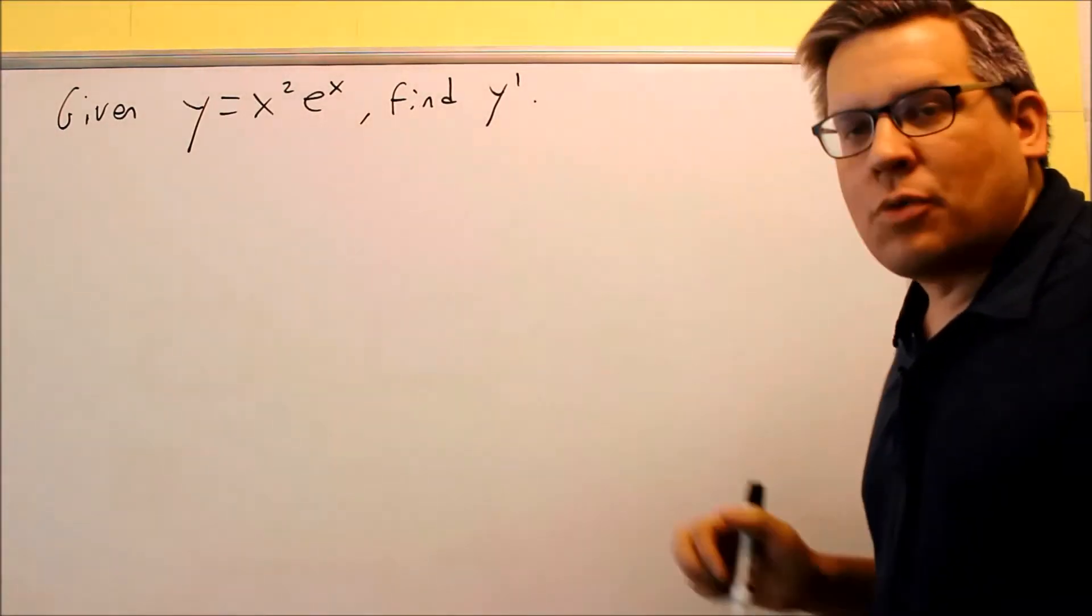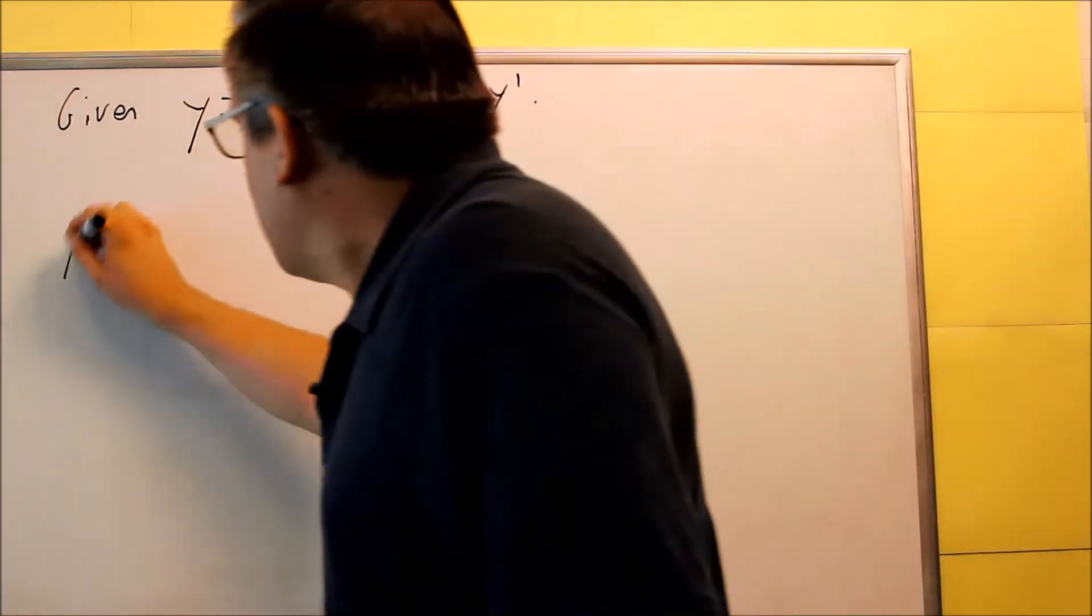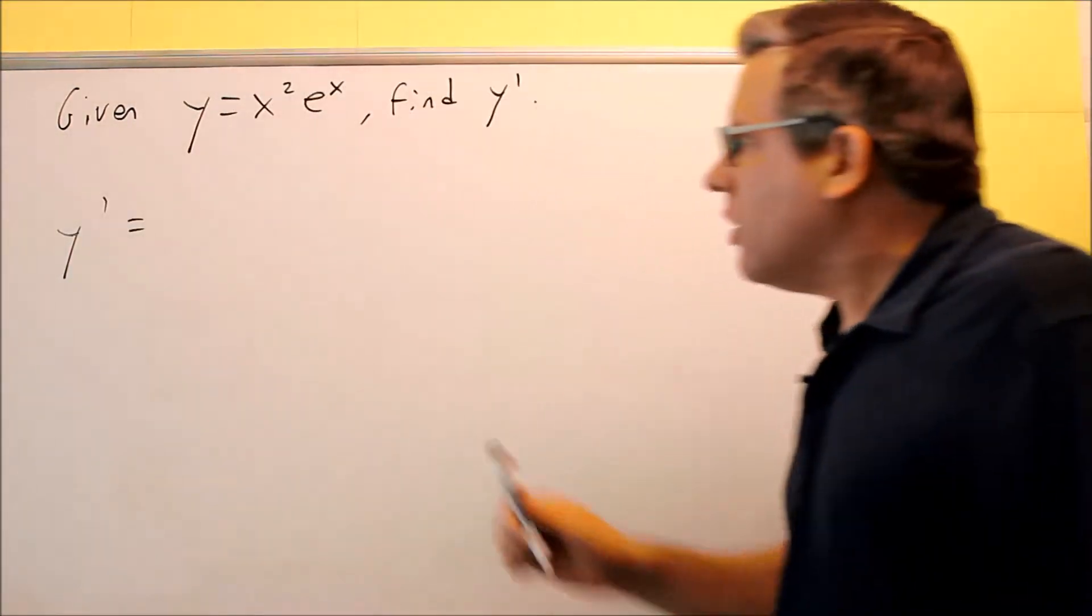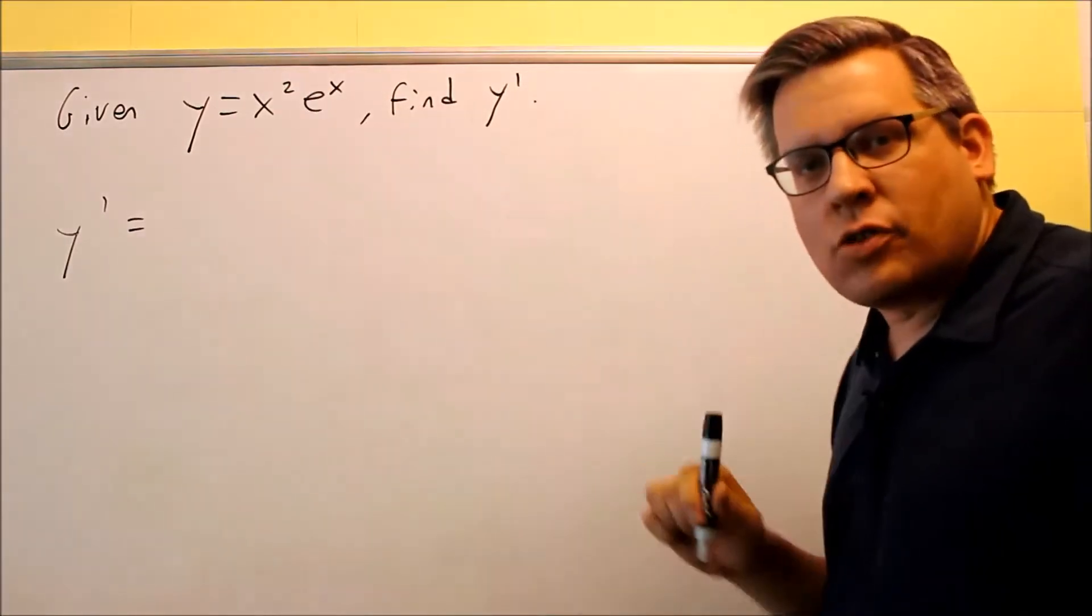So for this one, we have two things multiplied together that tells us we have to use product rule. So that means that you're going to take the first thing times the derivative of the second plus the second times the derivative of the first.